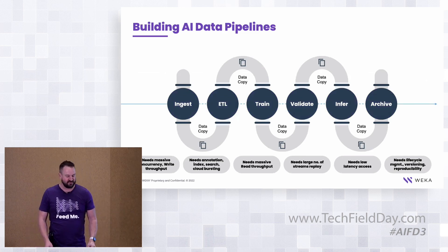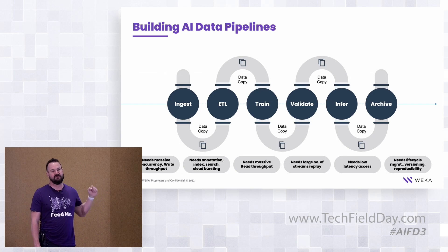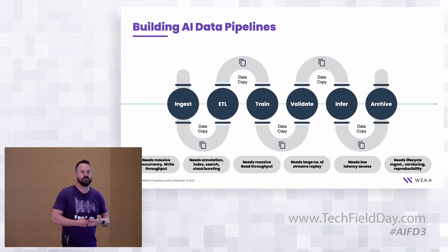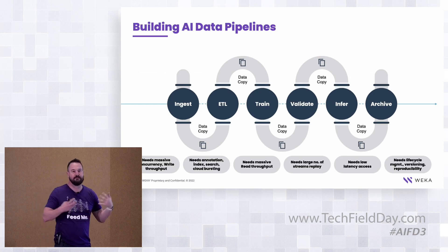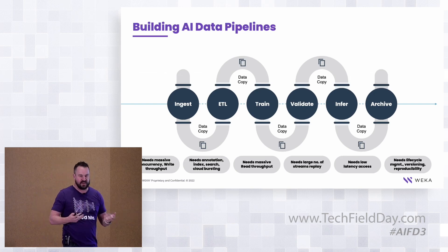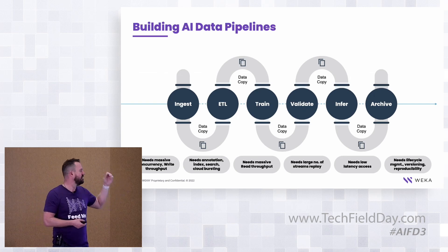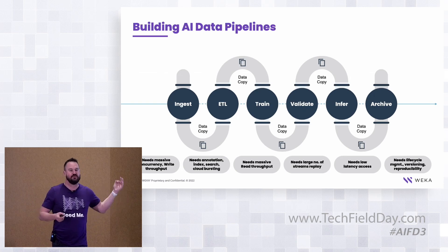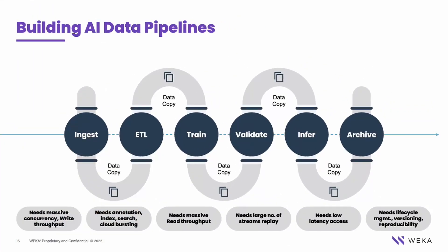Between each of these steps, there are different requirements for the data. Each step may have different input types and different protocols that data is being written with. It may also have different performance profiles — you may have small files that require fast access with low latency, or you may need high bandwidth to serve images out of. Each one of these steps has traditionally been handled differently, whether it's a different file system or a different storage type, right? And to manage that, you traditionally have to copy data between each step. That copying introduces complexity, human error, and wasted time.